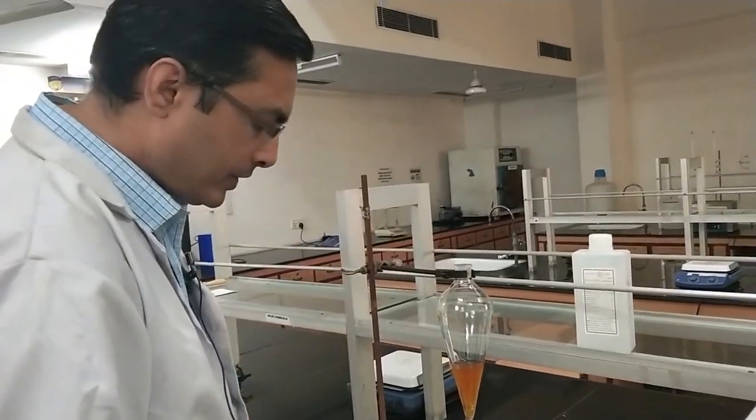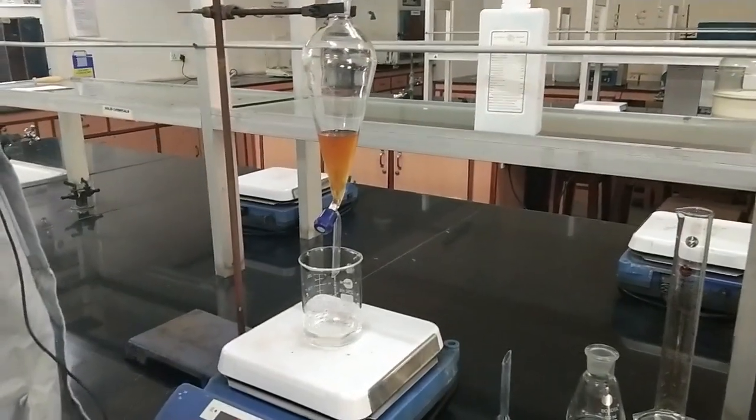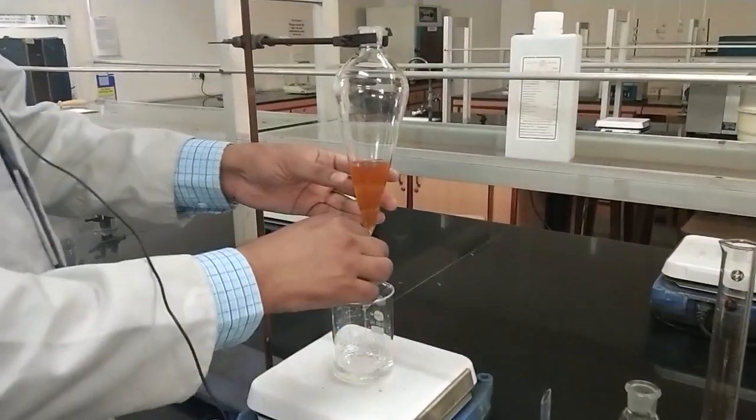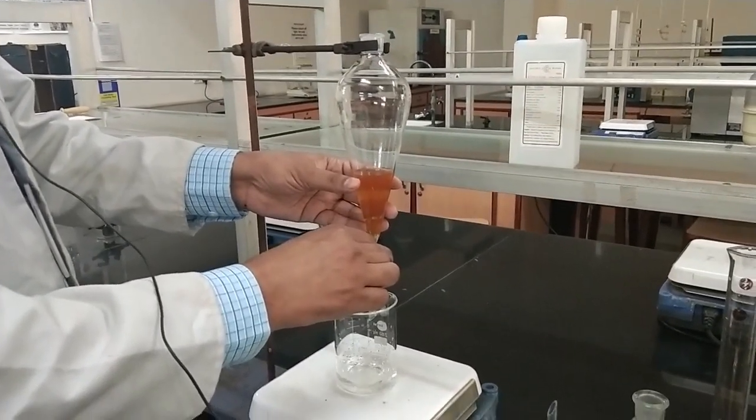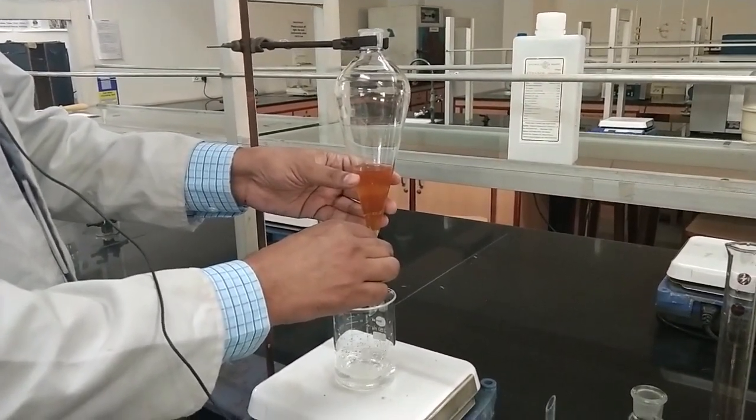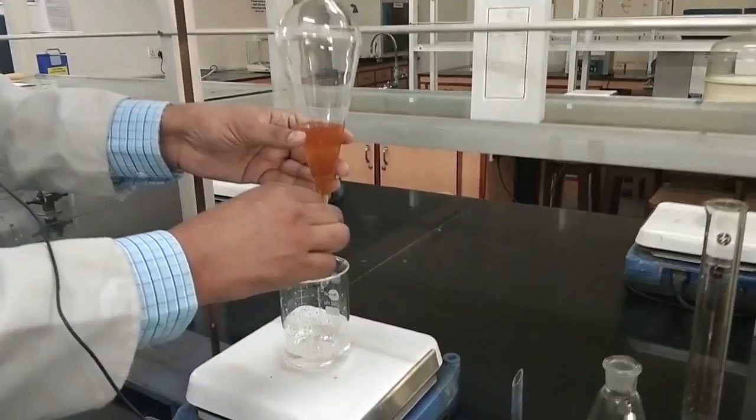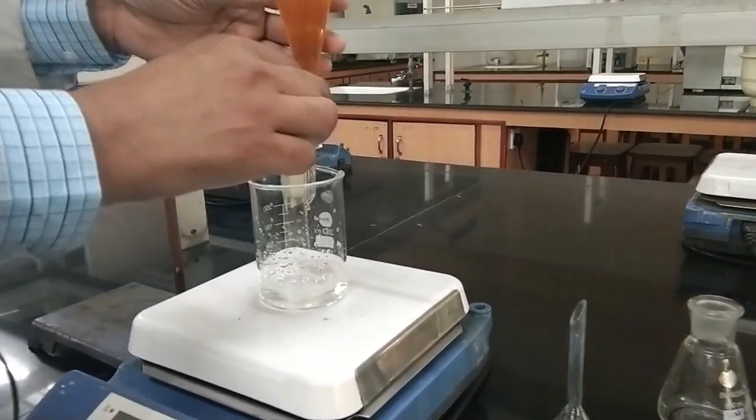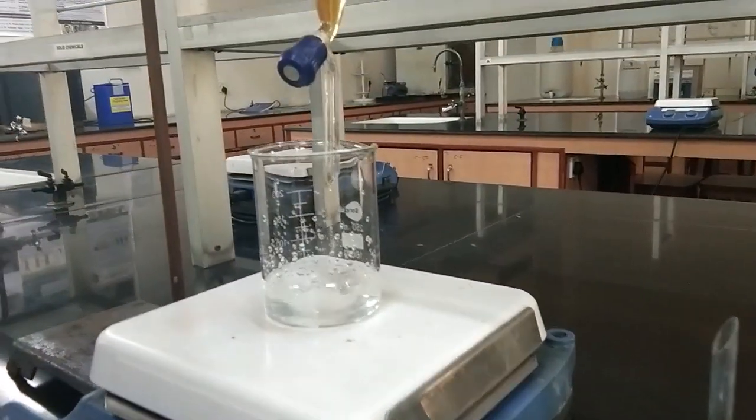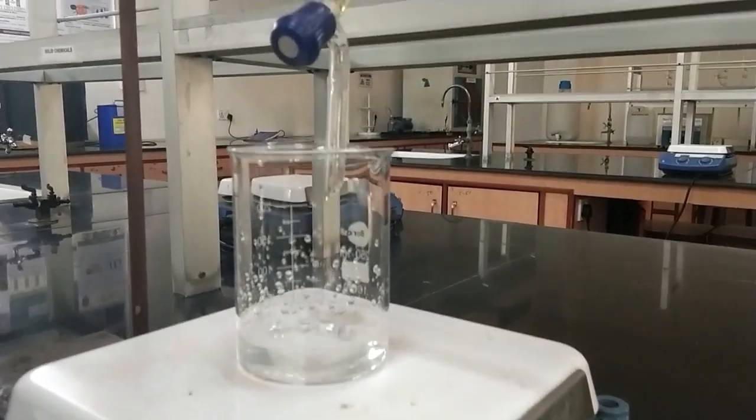We turn on the stirring and now we very slowly open the separating funnel so that slow addition of sodium pyrophosphate takes place. The slower you add, the smaller nanoparticles you will get.